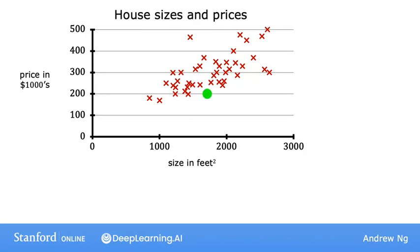Let's plot the data points for various houses in the dataset. Each of these little crosses is a house with a size and a price that it most recently was sold for. Now, let's say you're a real estate agent in Portland helping a client sell her house. She's asking you, how much do you think you're going to get for this house? You measure the size, and it turns out to be 1,250 square feet.